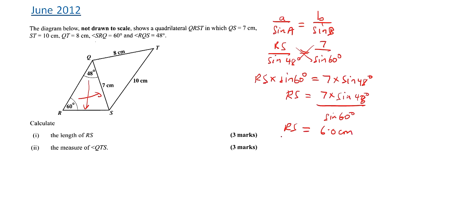I try to do everything as one calculation to avoid rounding errors. If you work out sin60° and sin48° separately and keep truncating, your final answer will be slightly off. So keep everything together. RS = 6 cm.